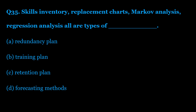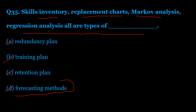Question number 35: Skills inventory, replacement charts, Markov analysis, and regression analysis are all types of — Option A: redundancy plan. Option B: training plan. Option C: retention plan. Option D: forecasting methods. The correct answer is Option D — these are all forecasting methods. Skills inventory, replacement charts, Markov analysis, and regression analysis are all forecasting methods.